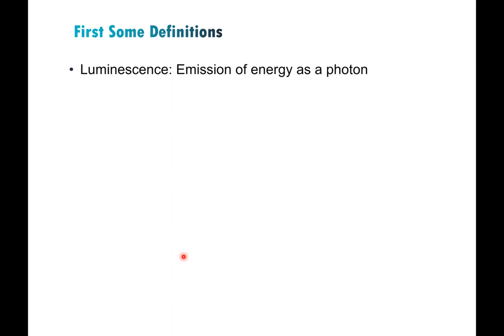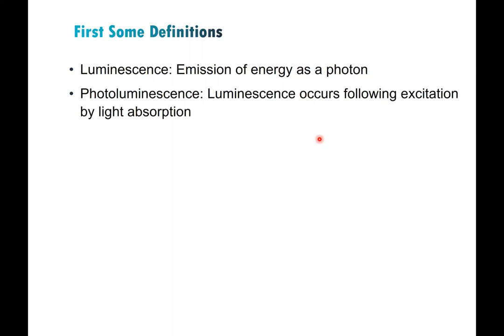Luminescence can happen with atoms, molecules, materials — whatever the case is. If something gives off energy in the form of light or electromagnetic radiation, that would be called luminescence. Within luminescence, there are a few different subcategories. The one we will almost exclusively talk about is photoluminescence, which is luminescence that occurs following excitation by light absorption. It absorbs a photon at one wavelength and then emits at a different wavelength.